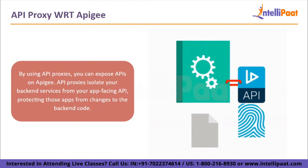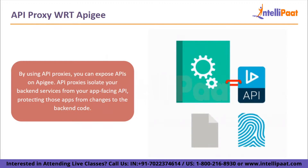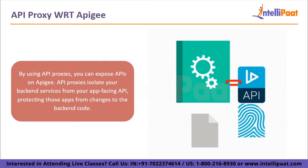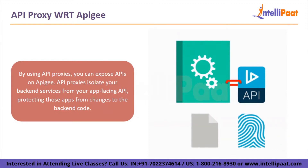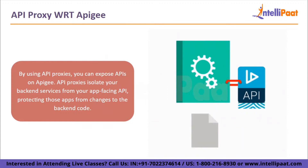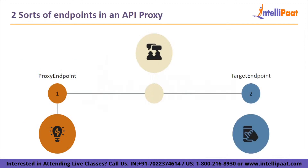Now let us see what is an API proxy. By using API proxies, you can expose APIs on Apigee. API proxies isolate your backend services from your app-facing API, protecting those apps from changes to the backend code. Apps continue to call the same API unabated as you make backend adjustments to your services. There are two sorts of endpoints that can be configured in an API proxy: the proxy endpoint and the target endpoint.